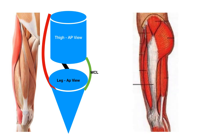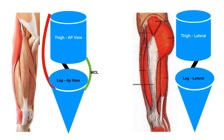Similarly, the lateral view of the thigh demonstrates the entire course of the iliotibial tract, and we see that the iliotibial tract gets attached to the lateral aspect of the upper part of the tibial condyle below the knee joint.